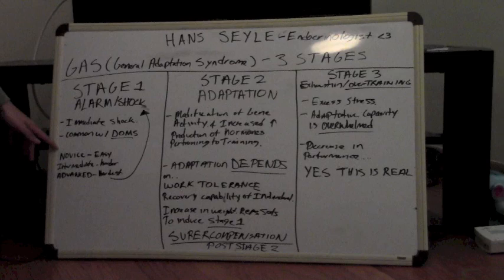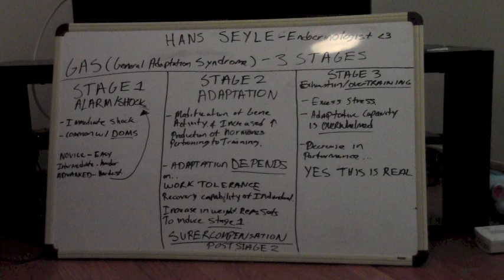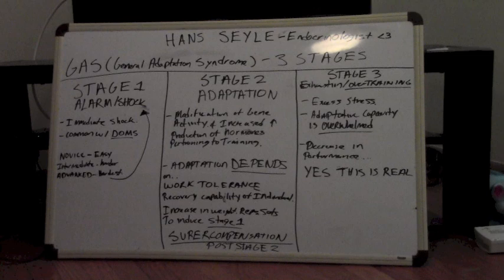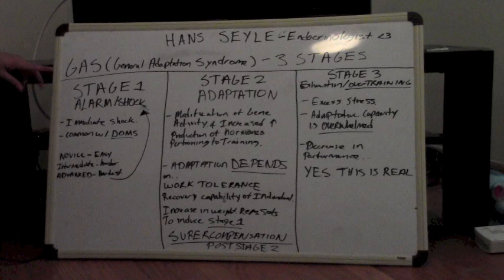And if you guys can see on the bottom I have novice, intermediate, advanced. What this means is that all trainees — whether you are novice, intermediate, or advanced — will respond to this, but very differently. With novice trainees, individuals were able to recover much more rapidly, even up to 24 hours, which is why they were ready to train the next day with really not much DOMS. But as you build up into the advanced level, it takes much more effort to actually induce this stage one alarm shock phase.